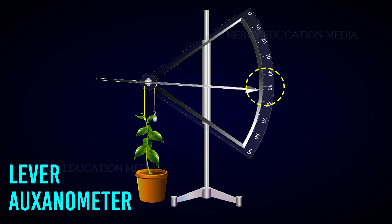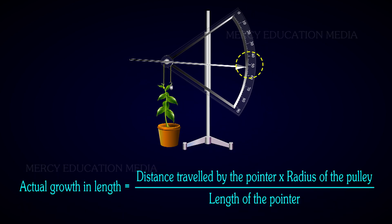The actual growth in the length of a plant is measured as follows: actual growth in length is equal to the distance travelled by the pointer multiplied by the radius of the pulley, divided by the length of the pointer.